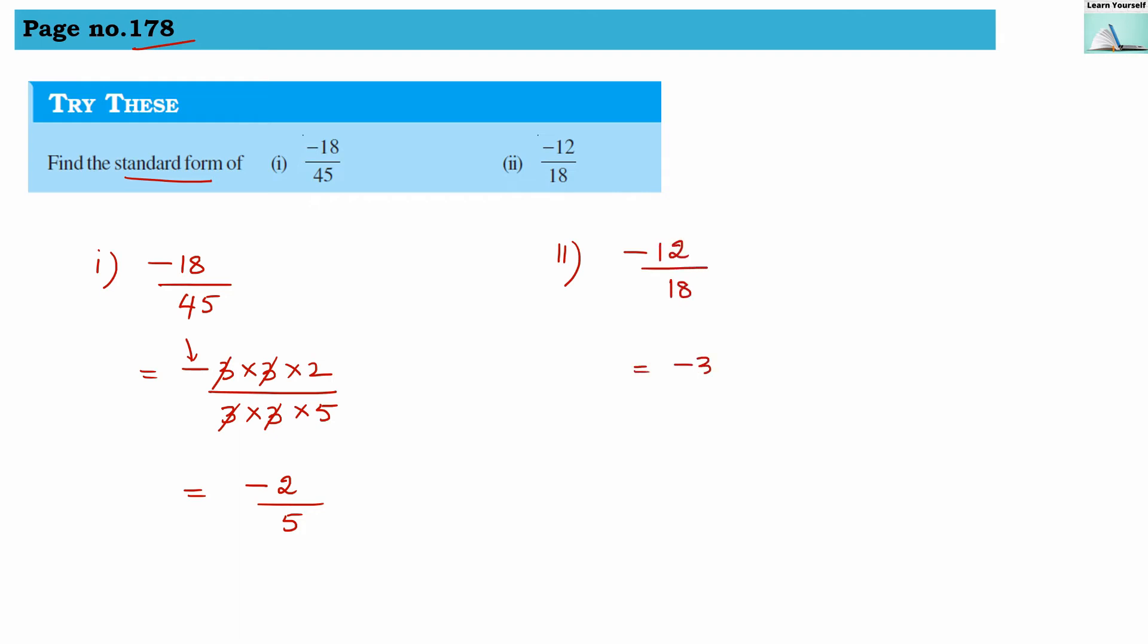So minus 3 into 2 into 2, so we will get minus 12. Then we will get 3 into 3, 9 into 2 is 18. So 3 we can cancel off and 2 we can cancel off, so here we will get minus 2 divided by 3.